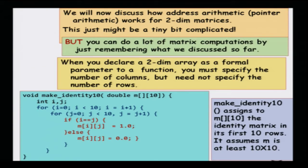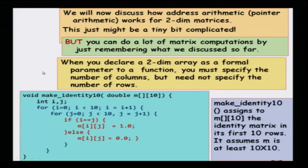We have seen that when you declare a 2D array as a parameter to a function, you should specify the number of columns but not the number of rows. Let us look at a function which makes an identity matrix. An identity matrix is a matrix that has 1 along its diagonal and 0 everywhere else.